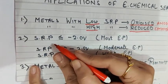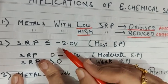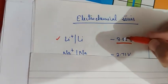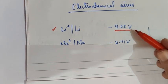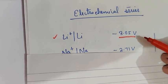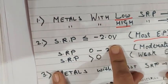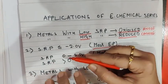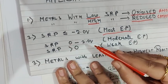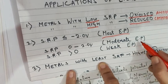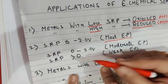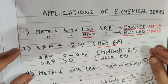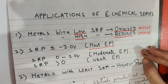Next point: if the standard reduction potential of a metal is less than or equal to minus 2 volts, it is the most electropositive element — for example, lithium with minus 3.05 volts. If the SRP ranges between 0 and minus 2 volts, it is moderately electropositive. If the SRP is more than 0, it is weakly electropositive. Electropositive means tendency to lose electrons and get oxidized easily.